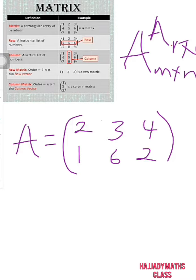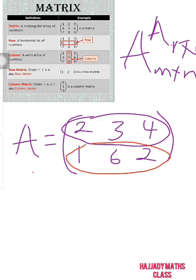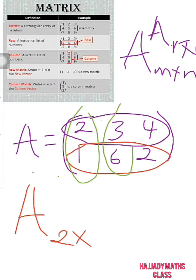Looking at an example of the matrix given to us here, we have our matrix A. Can you pause this video for a second and tell me the dimension of this matrix? We have two rows — one and two. And how many columns do we have here? We have one, two, three — so we have three columns. Therefore, in this matrix, we have two rows and three columns. That is how to determine the order of a matrix.